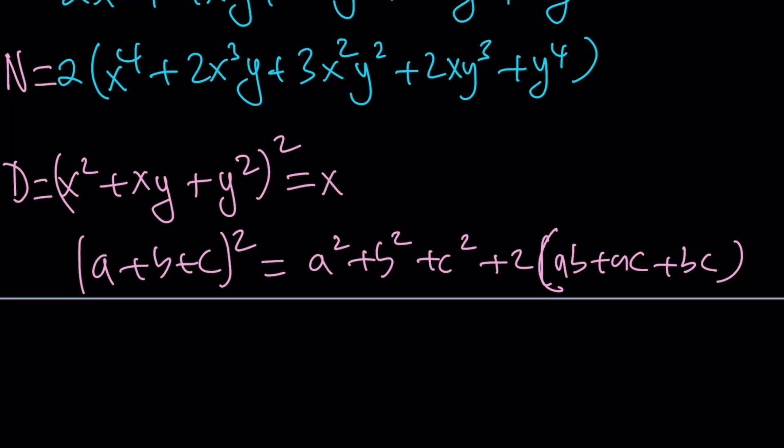Now, this is x to the 4th plus x squared y squared plus y to the 4th plus 2 times x cubed y. I'm just going to distribute the 2: 2x squared y squared and plus 2xy cubed. Awesome. So do you think these look familiar to you? They should be familiar because look at that - the expression inside the parentheses is the exact same thing as the denominator.